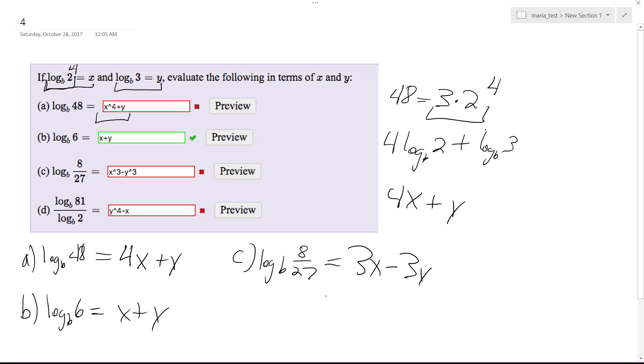And then d finally would be log base b of 81 over log base b of 2 would be equal to 4y divided by x which is 3 raised to the 4th which is 81 divided by 2. I hope this helps. I know it's a little funky but those are right. Thanks.